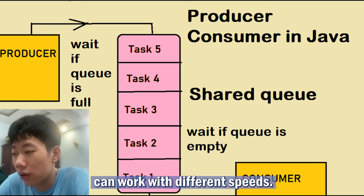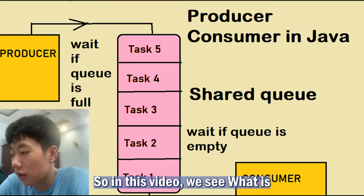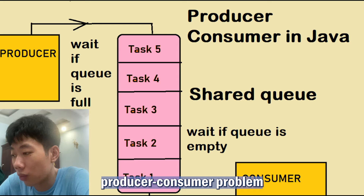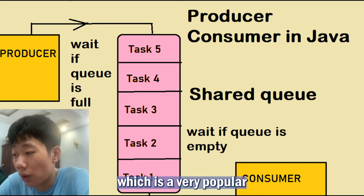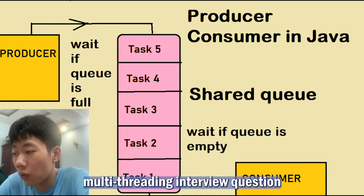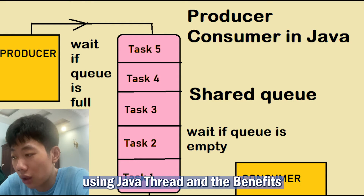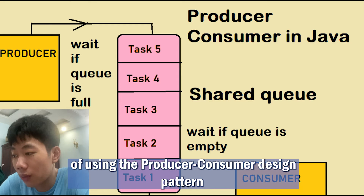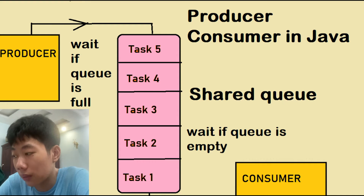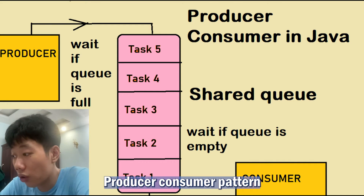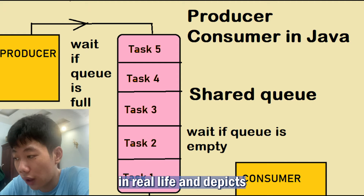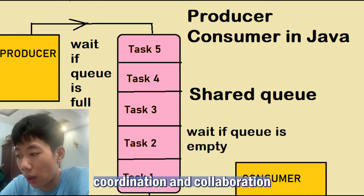It also addresses the issue of different timing requirements for producing or consuming items. In this video we will see what is the producer-consumer problem, which is a very popular multi-threading interview question, how to solve it using Java threads, and the benefits of using the producer-consumer design pattern.